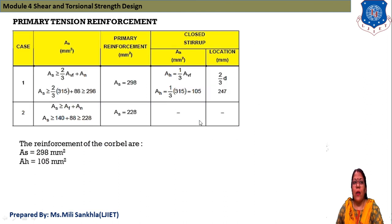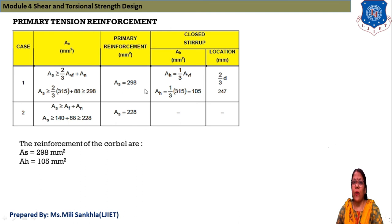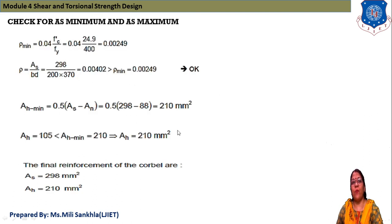Comparing both cases: Case 1 gives AS = 298 mm² and Case 2 gives AS = 228 mm². Since 298 > 228, we select Case 1: AS = 298 mm² and AH = 105 mm².